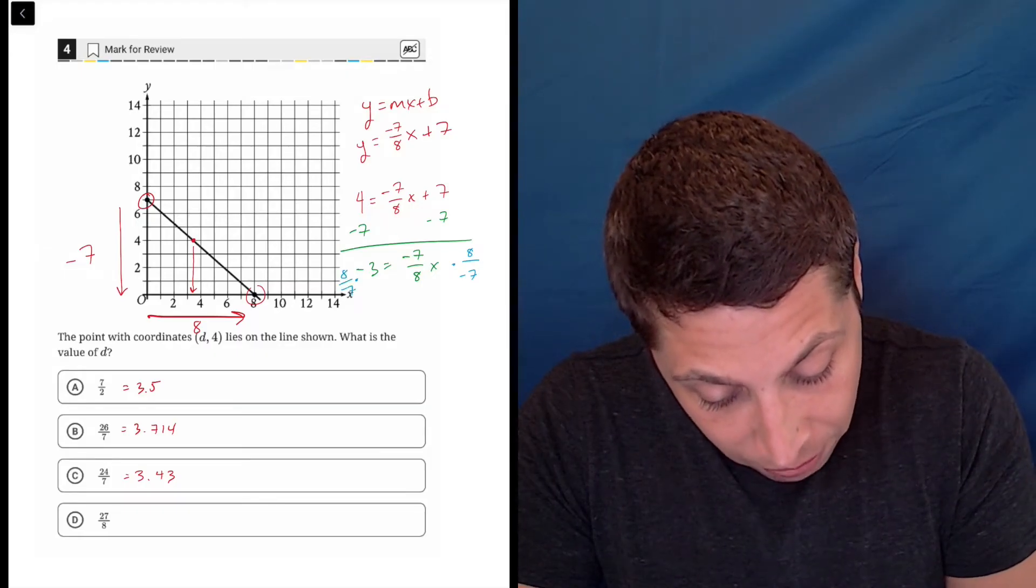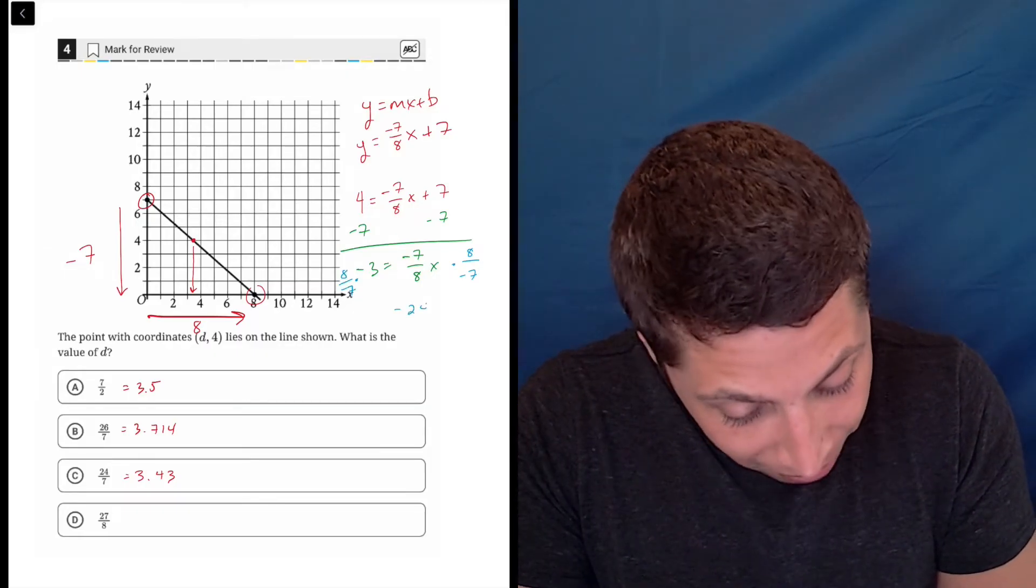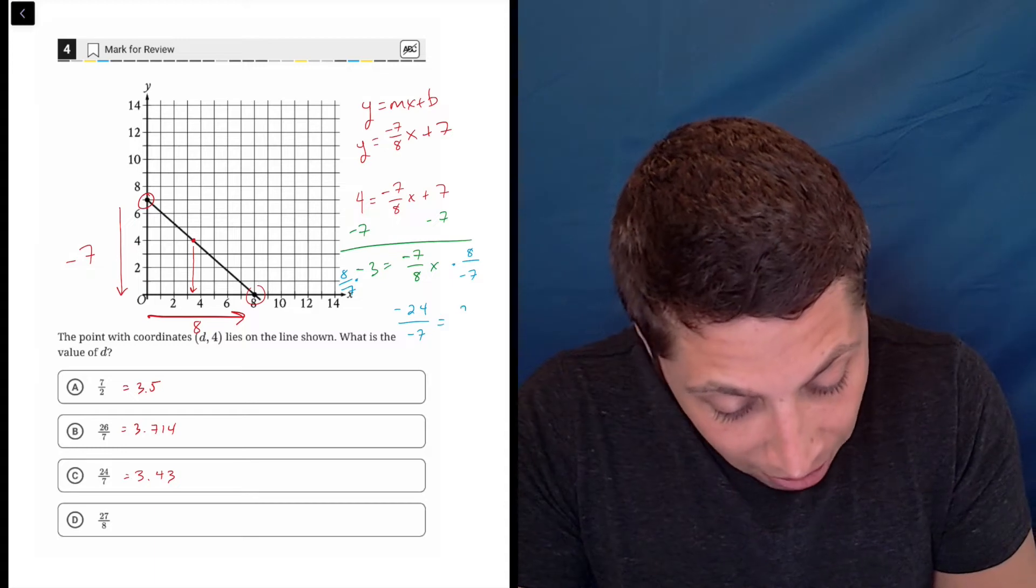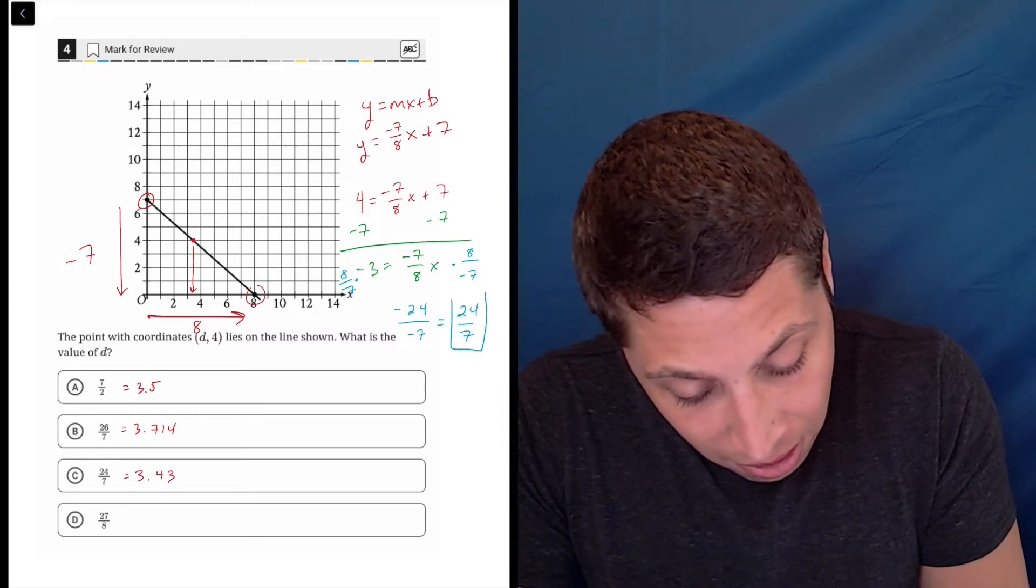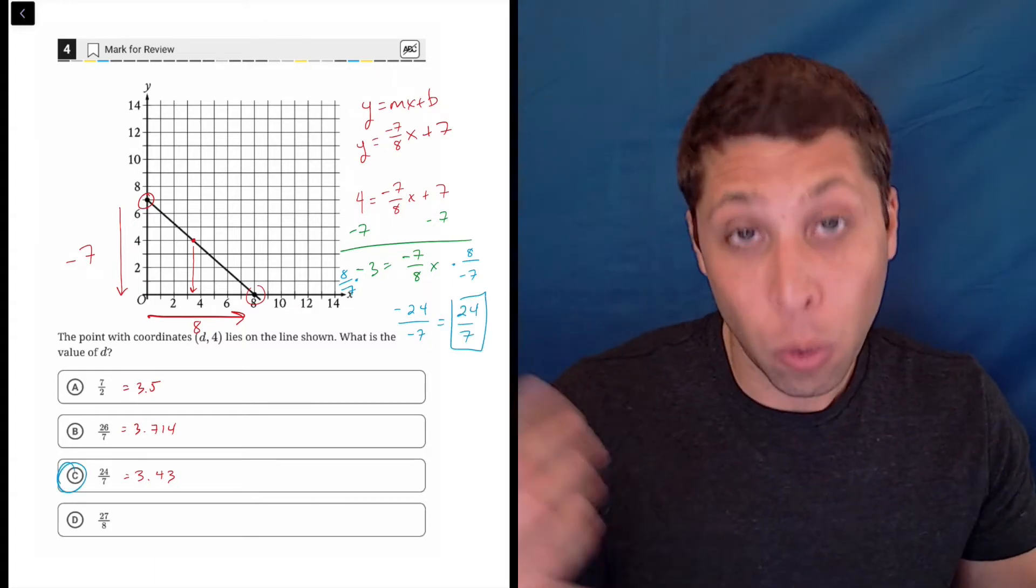So we get negative 24 over negative seven, which is just 24 sevenths, which is choice C, which is the answer.